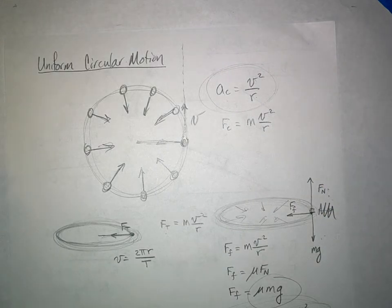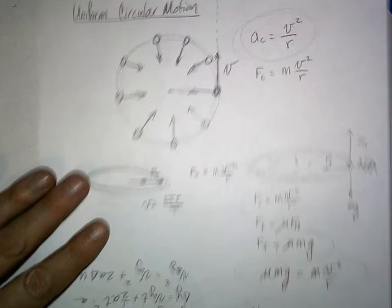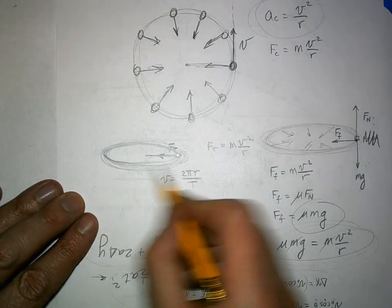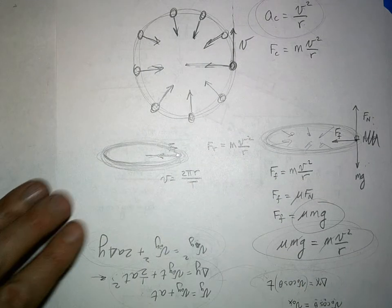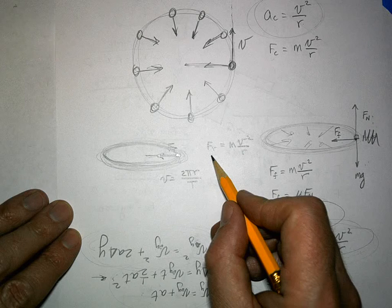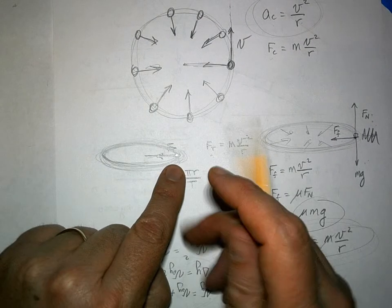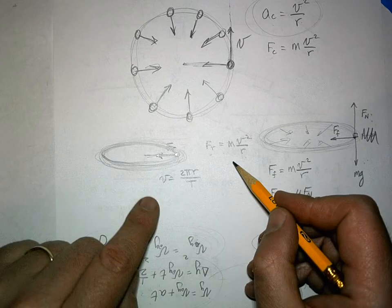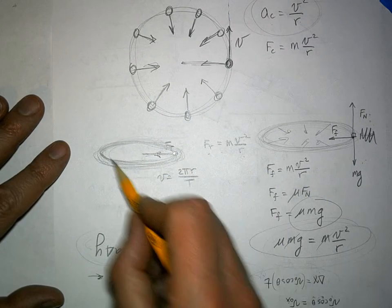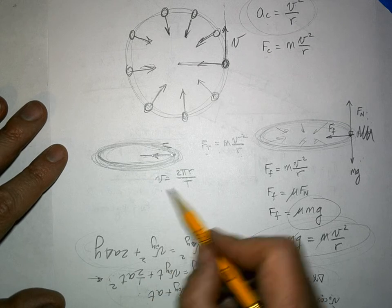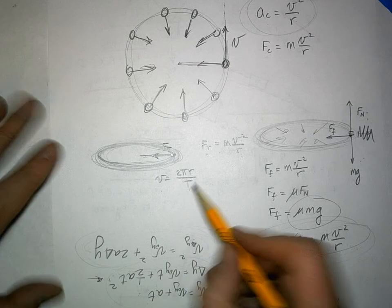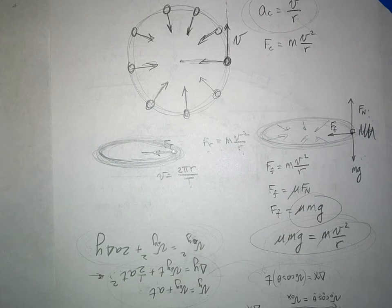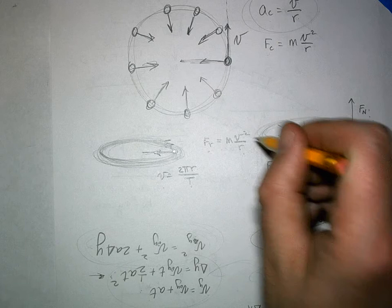There are two kinds of circular motion problems on the test. The first: a mass on a string whirled in a horizontal circle — the tension force is the net centripetal force, so T equals mv-squared over r. Also remember that if something moves in a circle, its velocity equals 2 pi r over the period T, where T is the time to go around once. You can substitute this into the equation to derive another form.